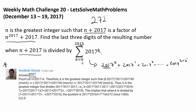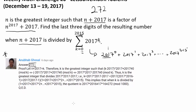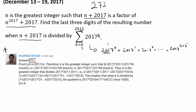2017 to the 0 power is 1. So we wish to find the greatest integer n, compute n plus 2017, and divide it by this summation and look at what we get. One way of attacking this — I'm going to attack it the same way Anuha Gosal attacked it — is to use modular arithmetic.